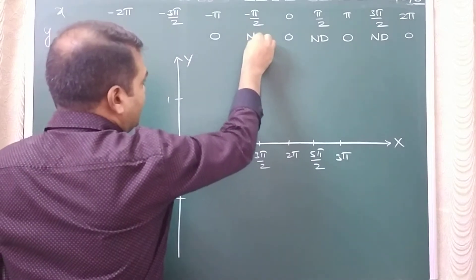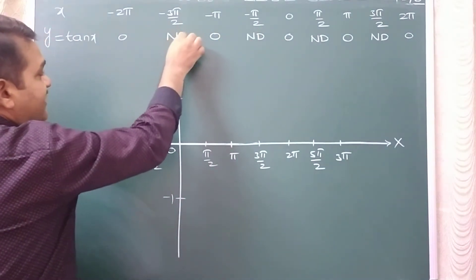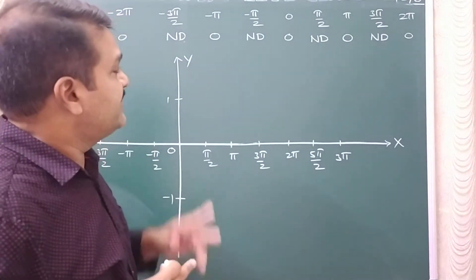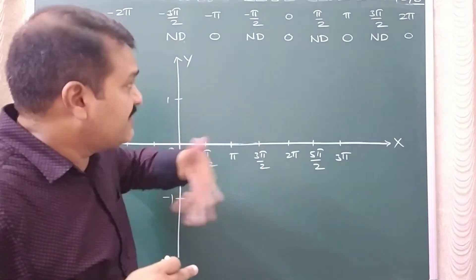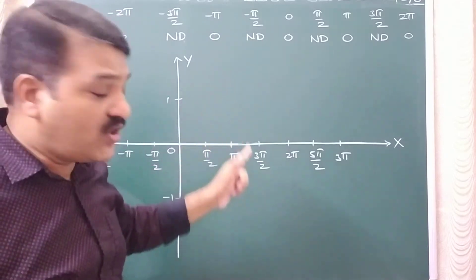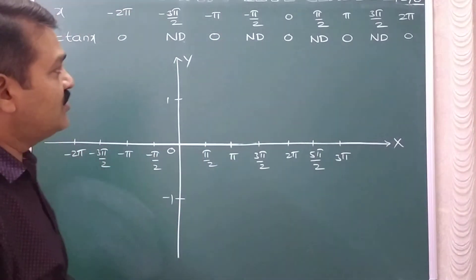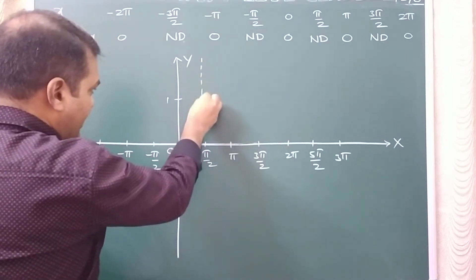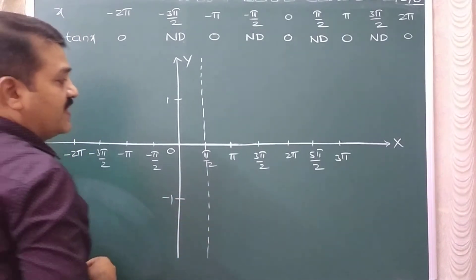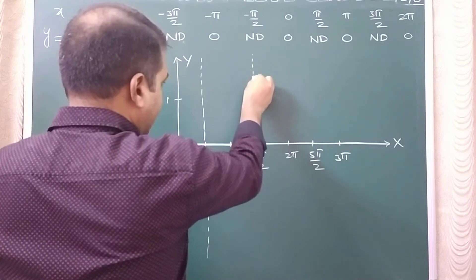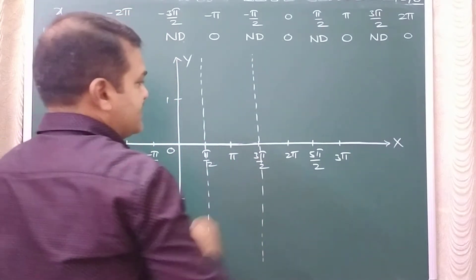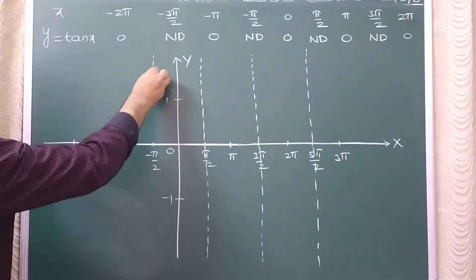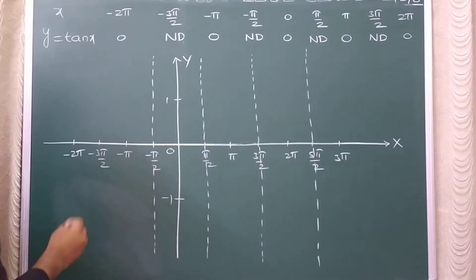For odd multiples of pi by 2, tan is not defined, and so on it continues. So first, wherever the tan function is not defined - that is, for whichever angles tan is not defined - you draw a dotted line parallel to the y-axis. So at pi by 2, tan function is not defined, so I will draw a line parallel to y-axis. For 3pi by 2 it is not defined, so I draw another one. At minus 5pi by 2 also tan function is not defined.